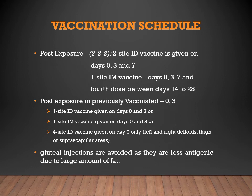In already-vaccinated persons who get a bite, fewer doses are needed. For intradermal vaccine: one site on days 0 and 3. For intramuscular vaccine: one site on days 0 and 3. If the vaccine needs to be given on a single day only, the four-site intradermal method is used — injecting into the left and right deltoid, thigh, or suprascapular areas.